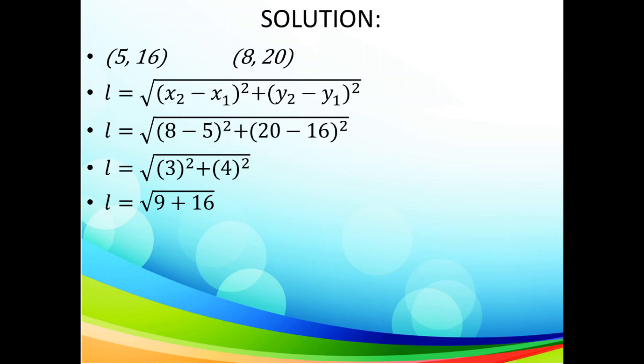When we square that, 3 squared is 9 and 4 squared is 16. We add them together. 9 plus 16 is 25. And then finally, we square root that, which will give us 5 units.